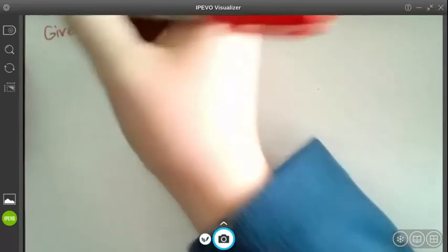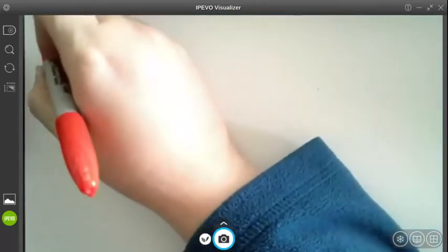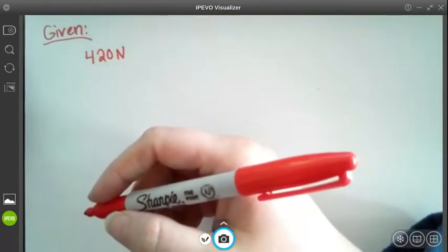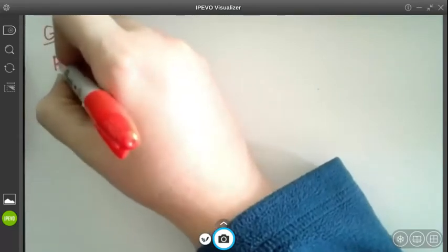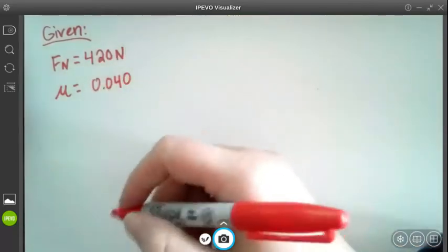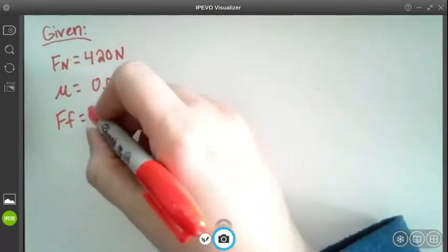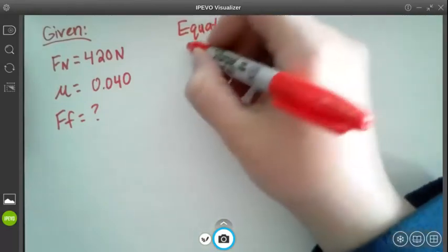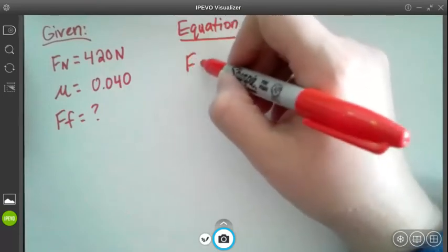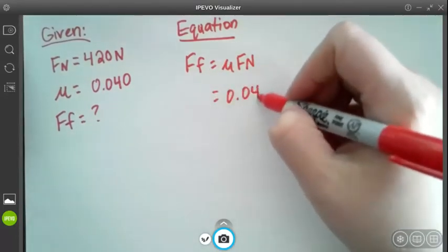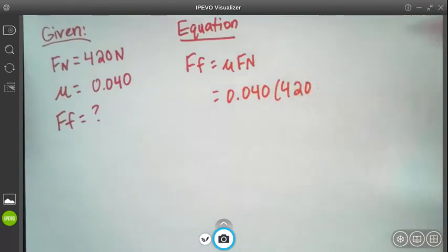Like always we always start with our given. What information are we given in the problem? We have a value of 420 newtons. It says that that is what he weighs so this will be our normal force. We have a coefficient of friction which is 0.040 and we want to solve for our frictional force. I'll put a question mark. Again after our given I always want you to write your equation which would be Ff equals mu Fn and then you're going to plug in your information. 0.040 times 420 newtons.